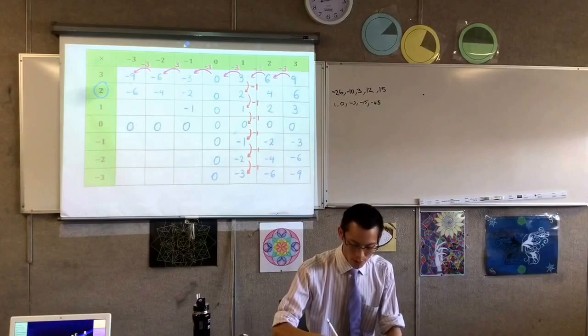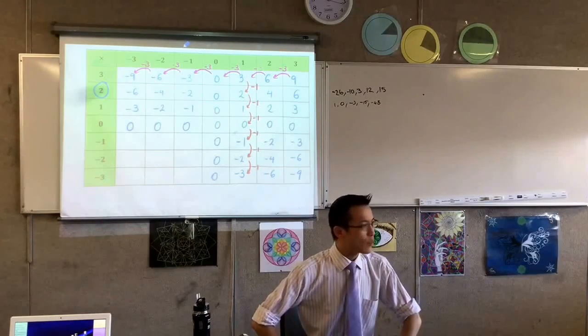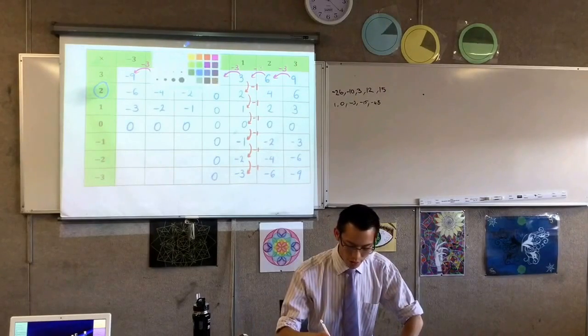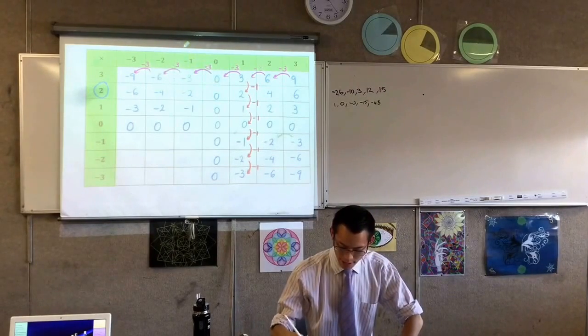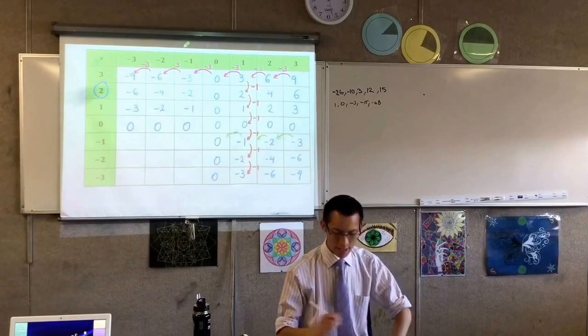In my one row, I'm going to get these numbers. But now, something weird happens here. Have a look. What's going on when I go from this to this, and this to this, and this to this?